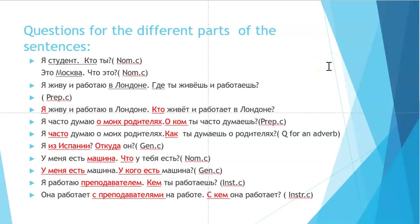If you want to put questions to a sentence, for example the statement 'я студент' (I am a student), the question would be 'кто?' — nominative case. For 'это Москва' — Moscow is inanimate — the question would be 'что? Что это? Это Москва.' This is nominative case.